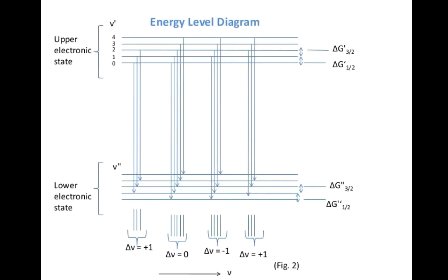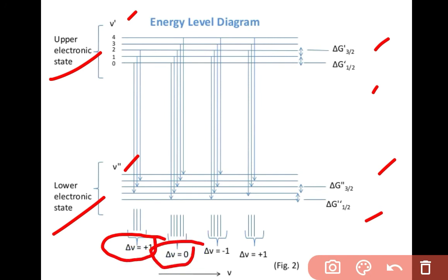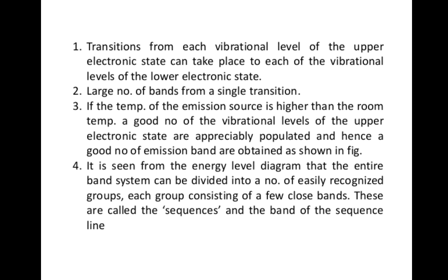The energy level diagram shows the upper electronic state and the lower electronic state with quantum numbers v' and v''. The selection rule during these transitions: ΔV = +1, ΔV = 0, and ΔV = −1 are all observed. Transitions from each vibrational level of the upper electronic state can take place to each of the vibrational levels of the lower electronic state.